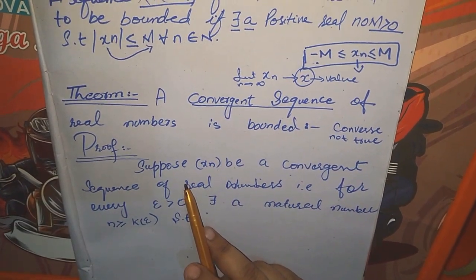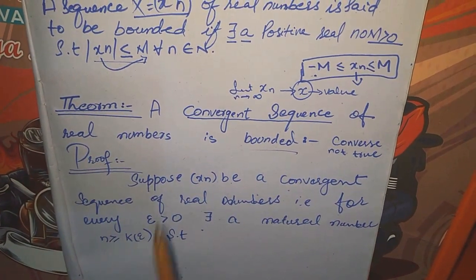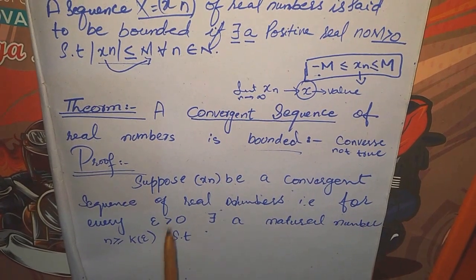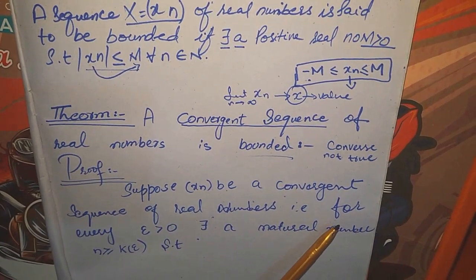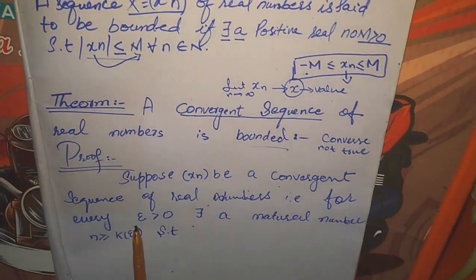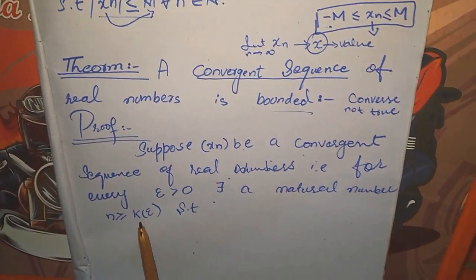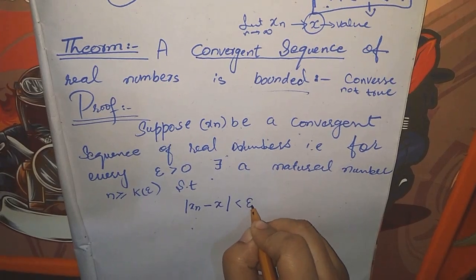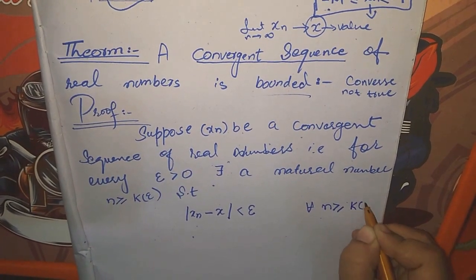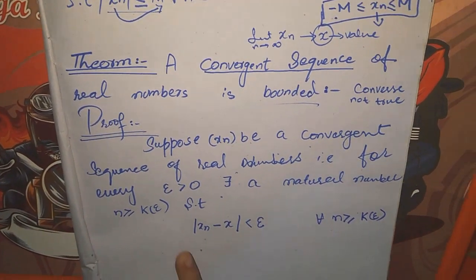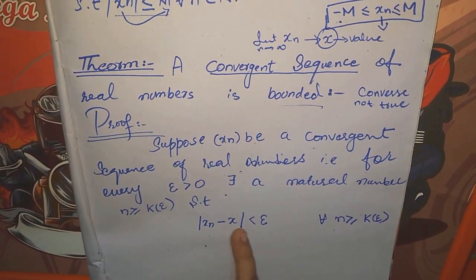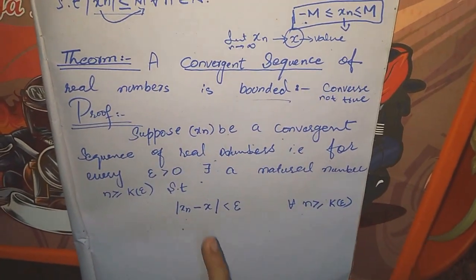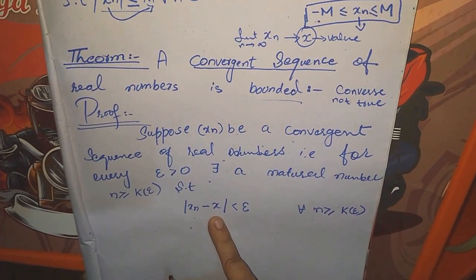Jo hamein given tha, hum usi ko lete chalenge aur end pe isko bounded proof karenge — jo bounded ki definition hai, woh end mein proof ho jaegi. Suppose x is a convergent sequence of real numbers. Maine us definition ko apply kiya jo convergent sequence ki hoti hai, yaani limit ki definition: for every epsilon greater than 0, yani har epsilon ke liye yahan par ek aisa natural number n hoga, greater than or equal to k(epsilon), such that |xn - x| < epsilon for all n greater than or equal to k(epsilon). Yaani is value ka mode kisi aisi number se less aa raha hoga, it means ki yeh value is cheez ko approach kar jaegi — toh tabhi yeh iska limit point hai. Hum ne just is cheez ko suppose kiya hai ki agar xn ek convergent sequence hai, toh uska koi na koi limit hoga, yaani woh kisi na kisi point ko approach kar raha hoga.